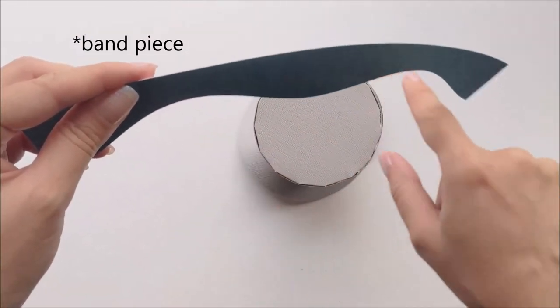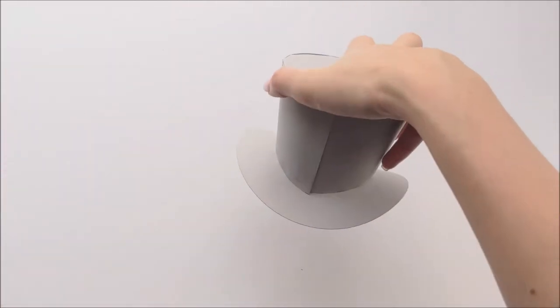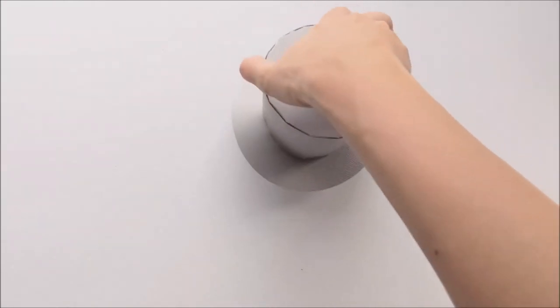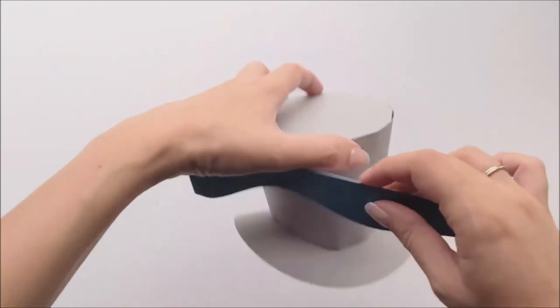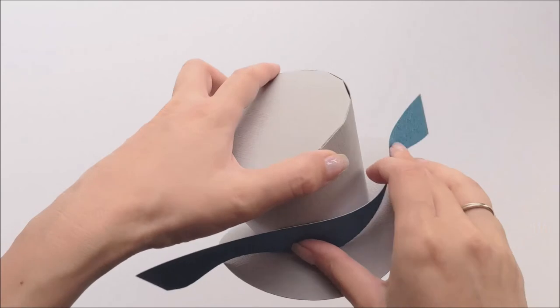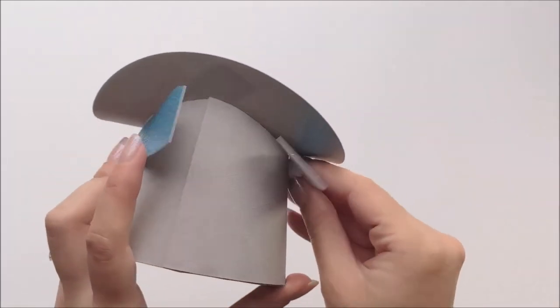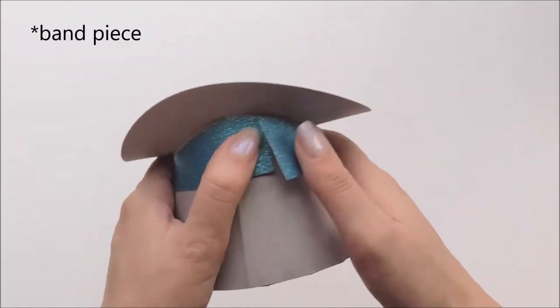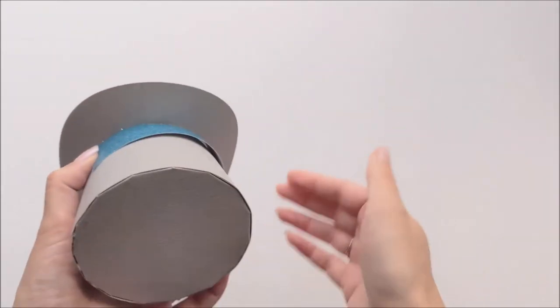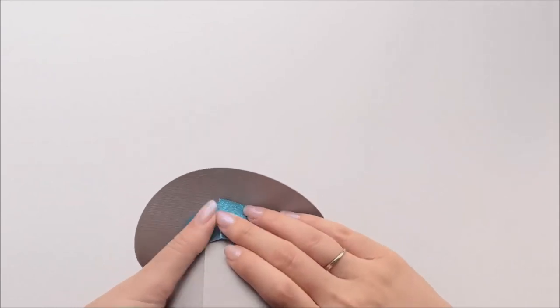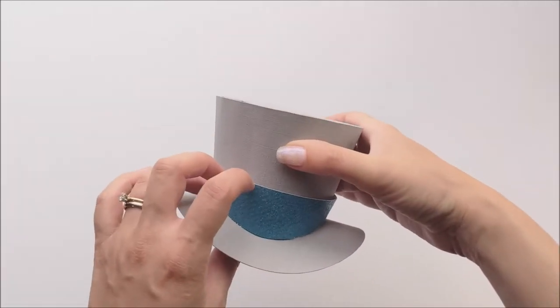The brim piece has a similar curve to the crown piece, so when you're putting that on you want to make sure that you are following that same curve, and when you put that on you want to make sure that the back seam of the brim piece is in the same place as the back seam of the hat, so that all the back seams are in the back and that the fronts are all pretty.